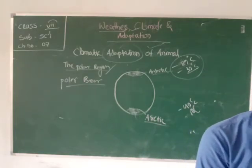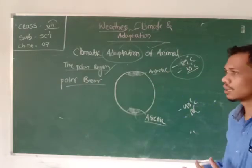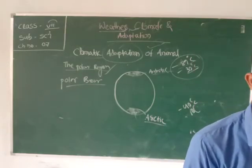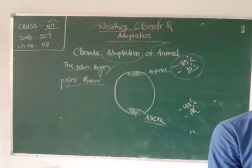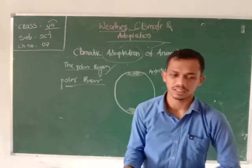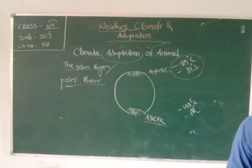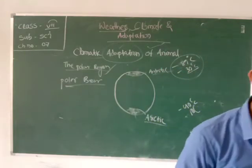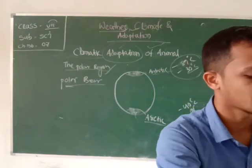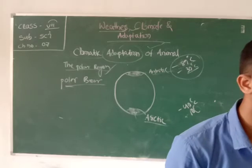Adaptation means some special feature or habit that is developed by a living organism to adjust to a particular region. The development of special features and habits is called adaptation. What special features has the polar bear developed to survive in such a cold region? First, it has a very thick layer of fur that keeps it warm. It also has long hair between the pads on its feet to keep it warm and help it walk on ice.